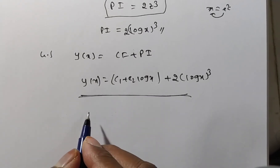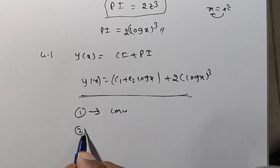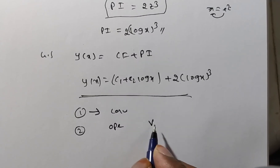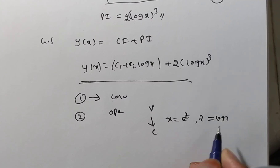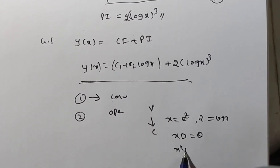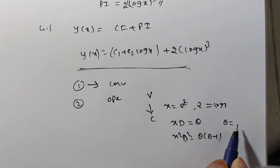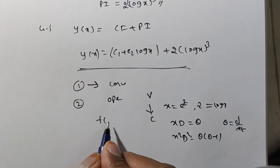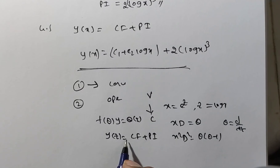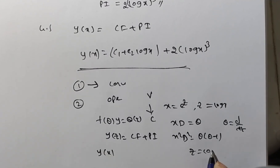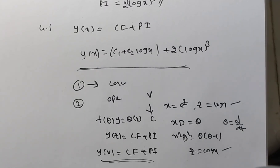To summarize the procedure: first convert to standard form, then write in operator form. For variable coefficient problems, substitute x = e^z (z = log x), replacing xD with θ and x²D² with θ(θ−1), where θ differentiates with respect to z. This gives f(θ)·y = Q(z). Find the complementary function and particular integral, then replace z by log(x) in the final solution to get the answer in terms of x. Thank you for watching.